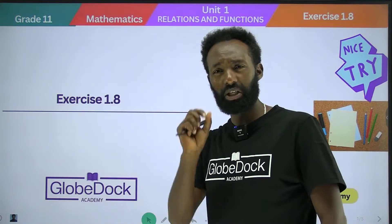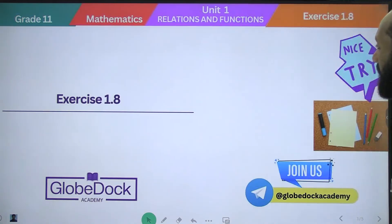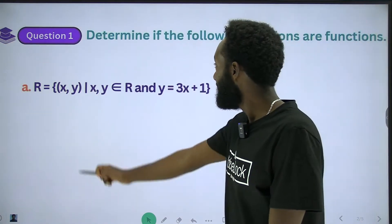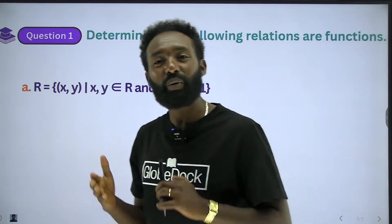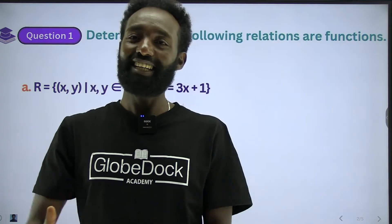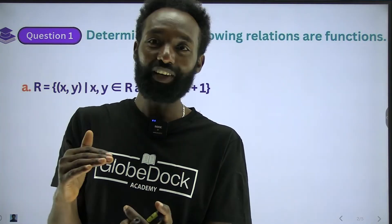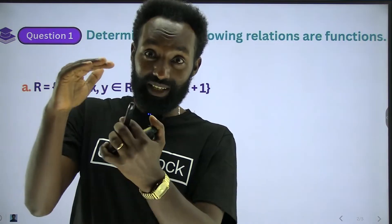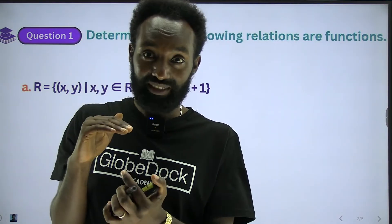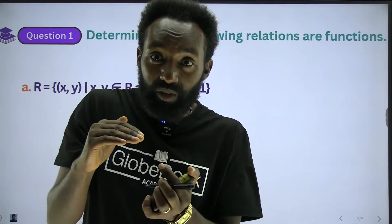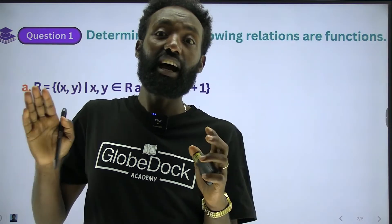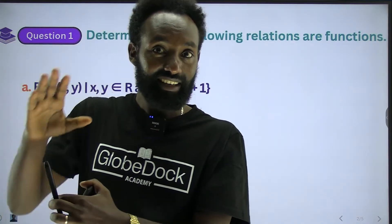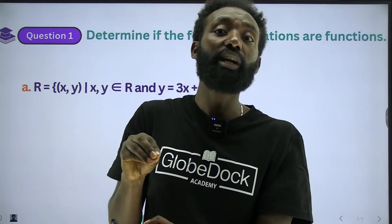Exercise one is to determine if the following relations are functions or not. We need to determine — mad ragno — and the relation. Function is a special type of relation. But all relations cannot be a function.